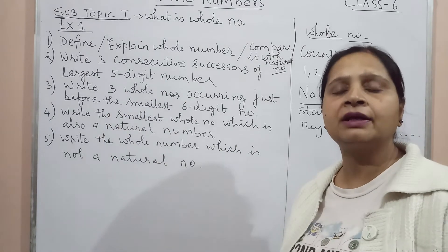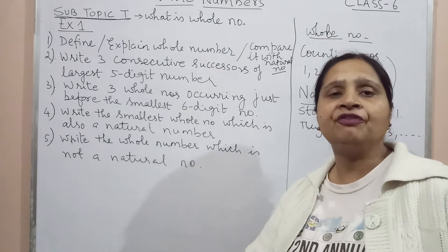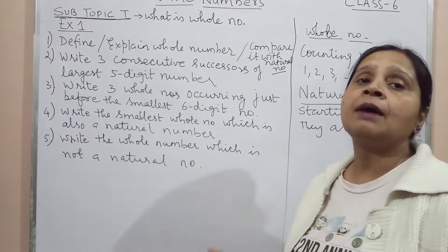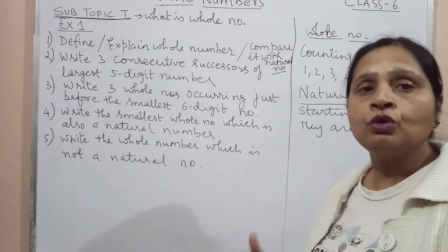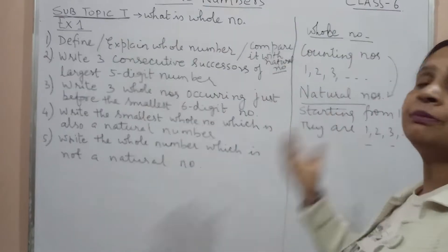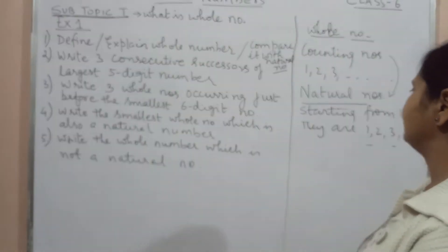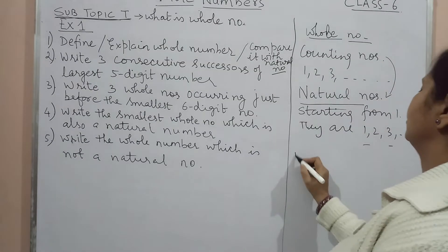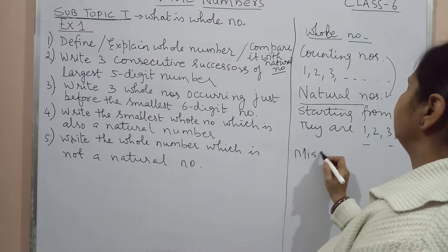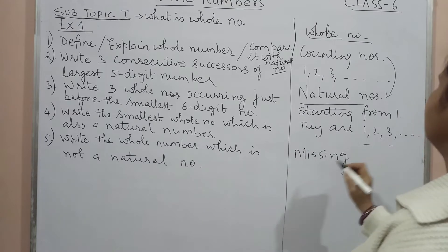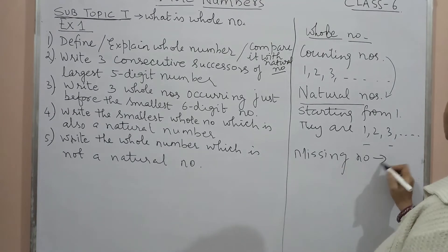But if there is any field where there are no trees, then aap kya count karke bataoge? Toh kahin na kahin is natural number mein kya tha? There was something which was missing and that missing part was zero. What was missing in the natural number? Missing number was zero.